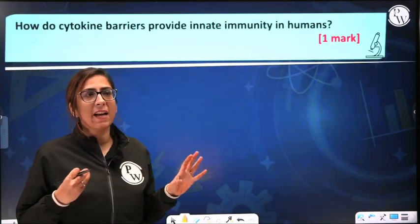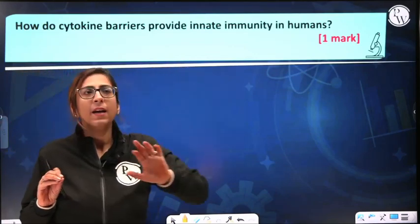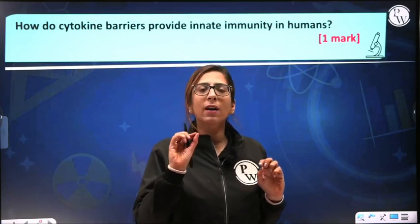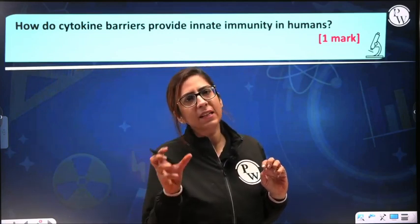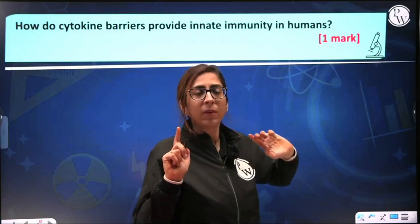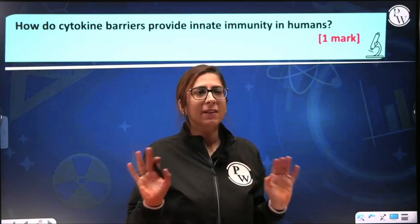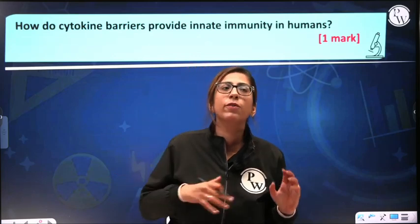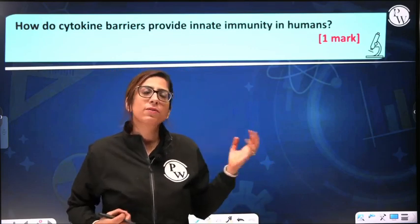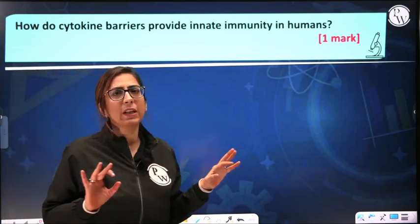The first question: how do cytokine barriers provide innate immunity in humans? Always remember — for a one-mark question, try to give a single-word or one-line answer only, because marks dedicated to these questions is just one mark. If a definition is required, just provide a one-line definition with an example. Do not go beyond; if you know lots about cytokine barriers, only one line is enough here.